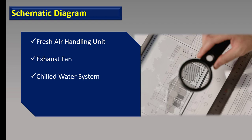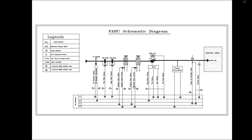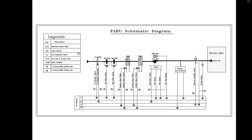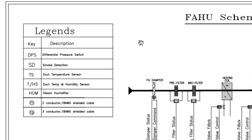I talked about all these systems in my previous videos, so you can have a look at those for more information. Here we have a schematic diagram of a fresh air handling unit or FAHU. On the left side, we have legends for this schematic diagram, where DPS stands for differential pressure switch, SD is for smoke detector, TS is temperature sensor, TE and HS is duct temperature and humidity sensor, and HUM is steam humidifier. For cables, T1 is a two-conductor 18 AWG shielded cable, and T2 is a three-conductor 18 AWG shielded cable.